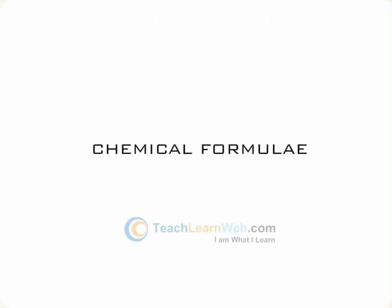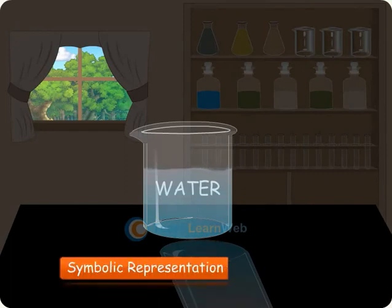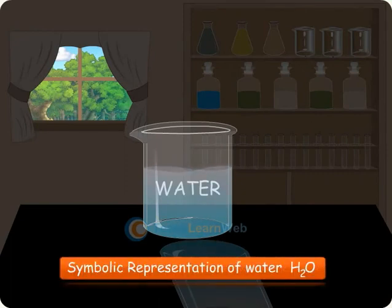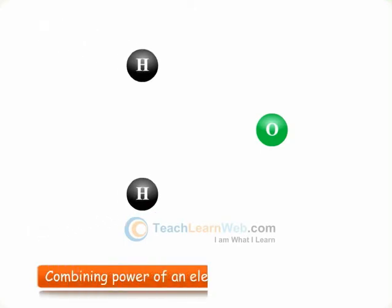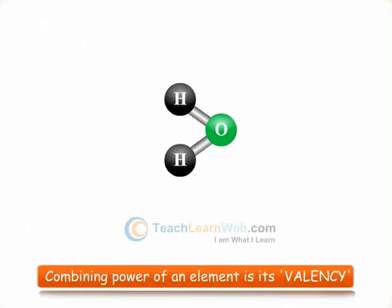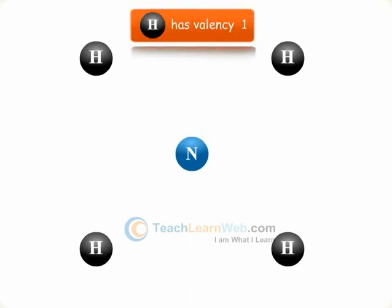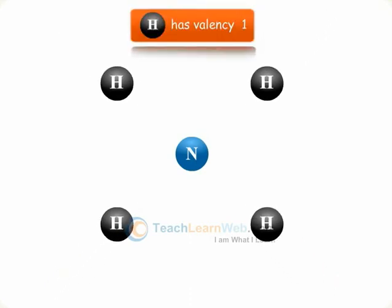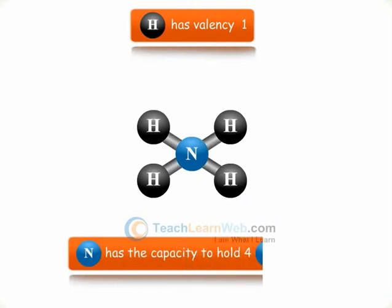The chemical formula of a compound is a symbolic representation of its composition. The combining power of an element is known as its valency. Valency can be used to explain the combination of atoms of one element with another element to form a compound.